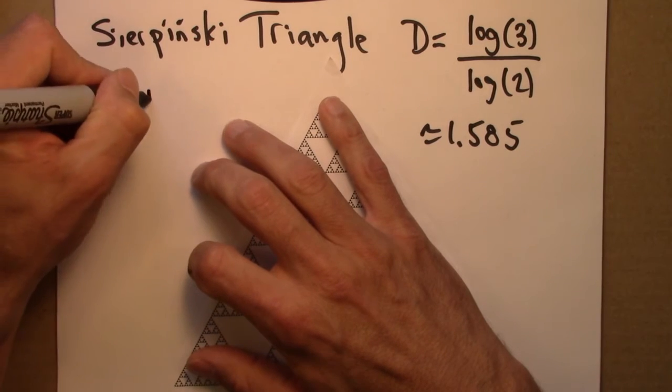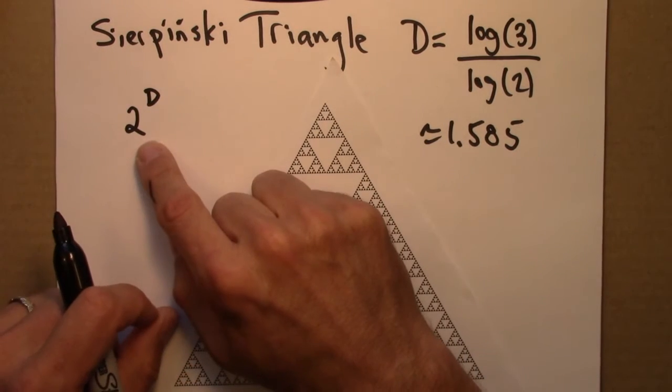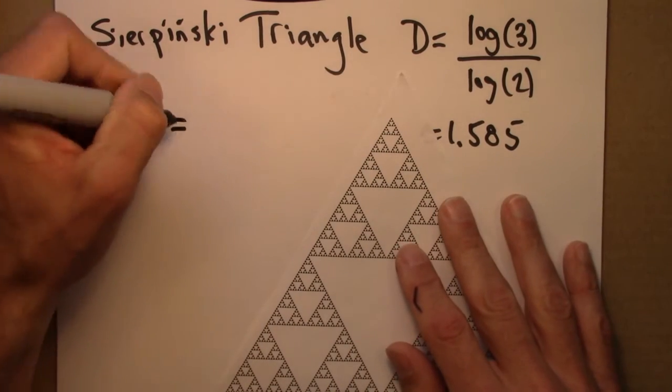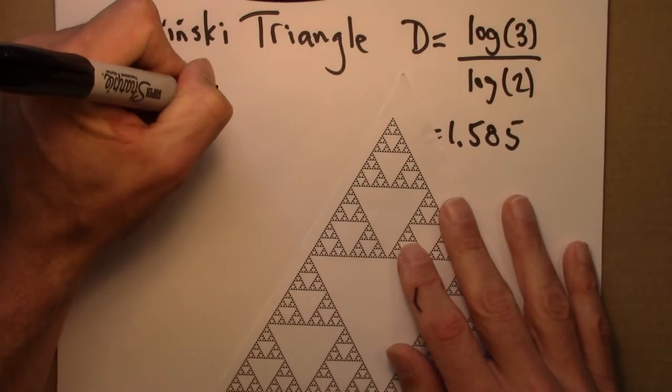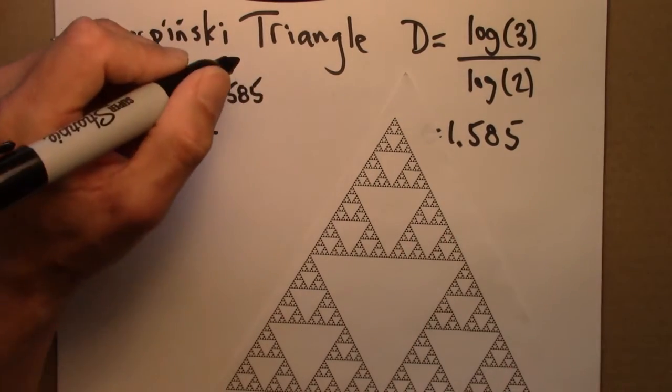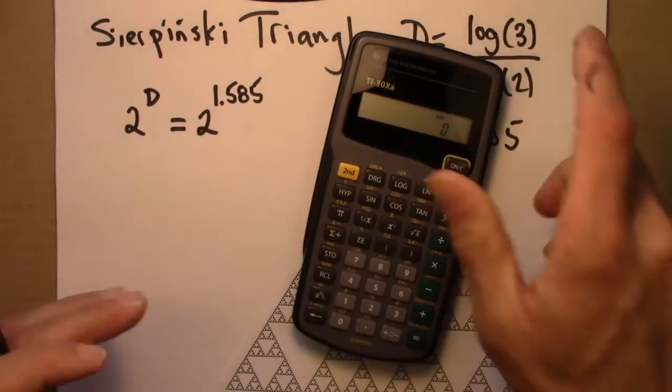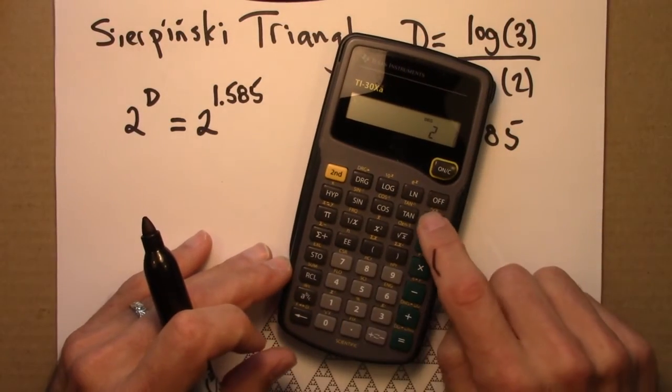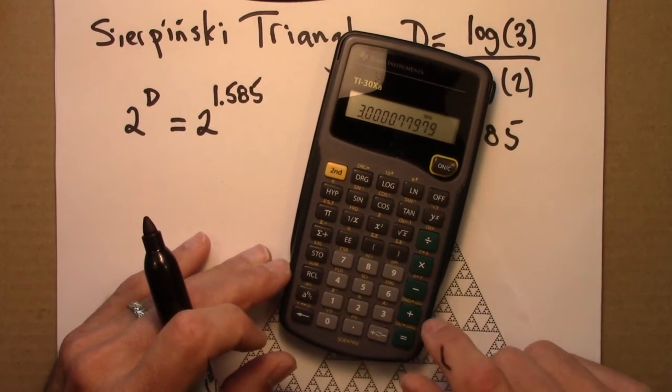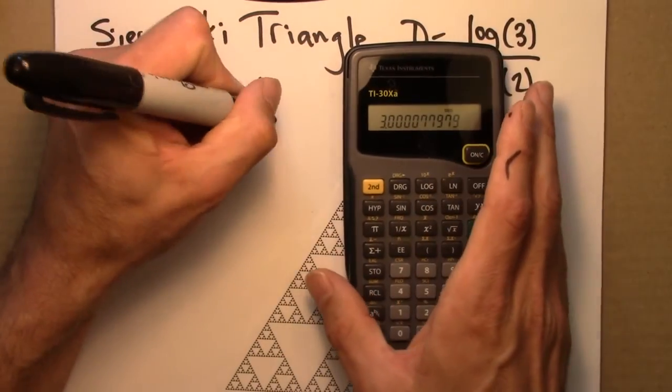What happens if we scale this up by 2? We've been taking the scale factor, in this case 2, and raising it to the dimension D. Now that dimension happens to not be an integer, but that's no big deal. We can handle that on a calculator. 2 to the 1.585 is around 3, almost exactly 3.